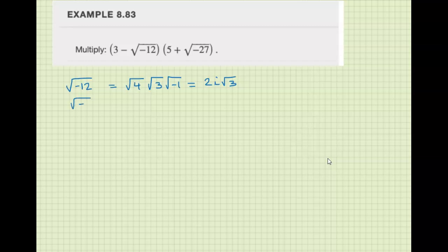Square root of negative 27 is square root of 9, square root of 3, square root of negative 1. So this is 3i square root of 3.